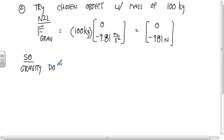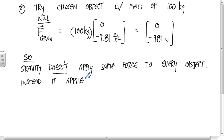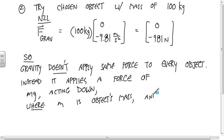So gravity doesn't apply the same force to every object. Instead, it applies a force of Mg acting downward, where M is the object's mass and g is 9.81 meters per second squared. The negative refers to the downward direction, so if we just talk about magnitude, we leave it positive.